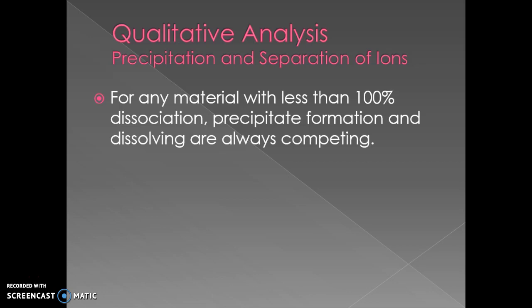For any material with less than 100% association, you can use precipitate formation and dissolving as a way of separating them out because they are competing against each other. The formation and the dissolving are competing against each other.